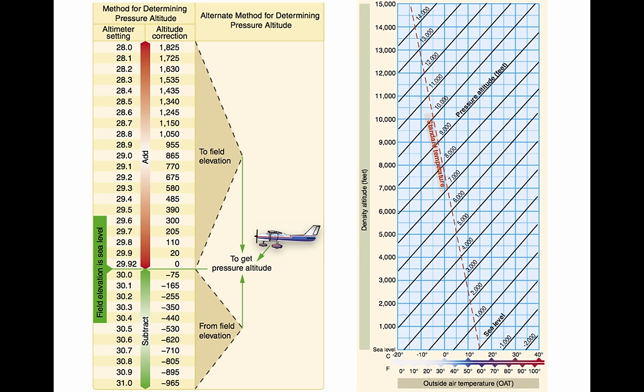The conditions that result in a high density altitude are high elevations, low atmospheric pressures, high temperatures, high humidity, or some combination of these factors. Lower elevations, high atmospheric pressure, low temperatures, and low humidity are more indicative of low density altitude. Using a flight computer, density altitude can be computed by inputting the pressure altitude and outside air temperature at flight level. Density altitude can also be determined by referring to the table and chart shown here.